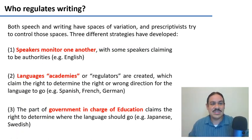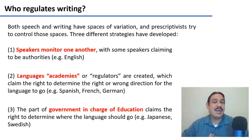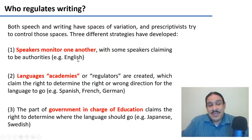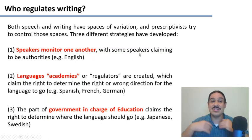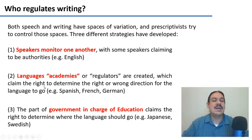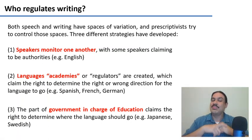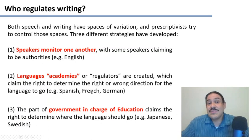There are just different variants of languages. But writing is where prescriptivism plays out most intensely, because people have always insisted there should be one way of writing and everyone should write the same way. The question has been: who gets to decide how we write our languages? Different languages have come up with different solutions. In English, speakers pretty much monitor one another, and some — like writers and dictionary makers — claim to be the authorities. Other languages have created academies of regulators, as has been the case famously for Spanish and French.